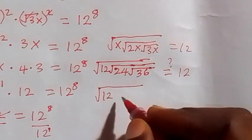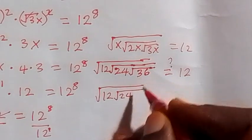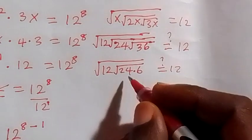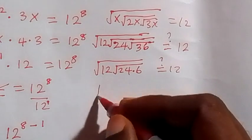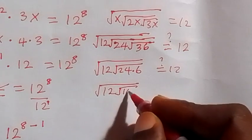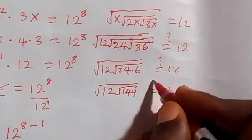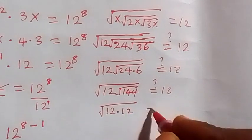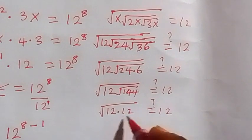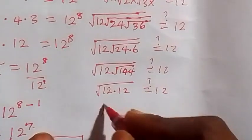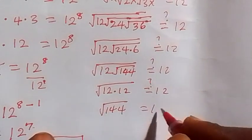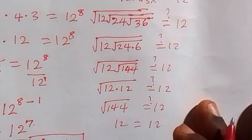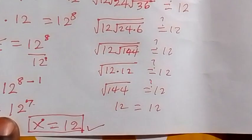The square root of 36 is 6, so we have the square root of 12 times the square root of 24 times 6. Then 24 times 6 is 144, giving us the square root of 12 times the square root of 144. The square root of 144 is 12, so we get the square root of 12 times 12, which equals 12. The left-hand side equals the right-hand side, confirming x equals 12 is our solution.